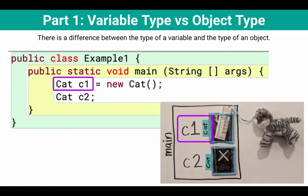So cat c1, that makes the variable. So you can see in my stack frame, I have a variable named c1, and it has type cat. That's the thing that's written in a blue post-it note, facing sideways.